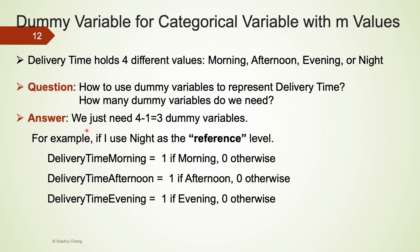For categorical variables with four values like delivery time, we just need three dummy variables. For example, if we pick night as the reference or baseline level, we will create three dummy variables: delivery time morning, delivery time afternoon, and delivery time evening. Delivery time morning is one for morning deliveries, and zero otherwise. Delivery time afternoon is one for afternoon deliveries. And delivery time evening is one for evening deliveries. Each assignment will have three numbers from these three dummy variables. For morning delivery assignment, it will be coded as 1 0 0. And for an evening delivery assignment, it will be coded as 0 0 1. And for night delivery assignment, it will be coded as 0 0 0.